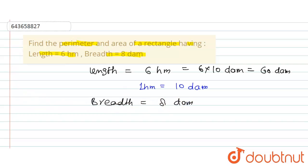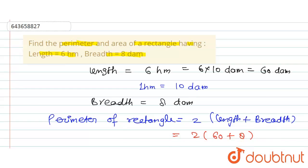And as we know, my students, perimeter of rectangle can be calculated by 2 times length plus breadth. So here the length is given as 60 decameter and breadth is 8 decameter.